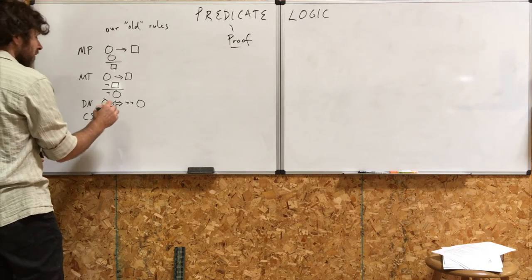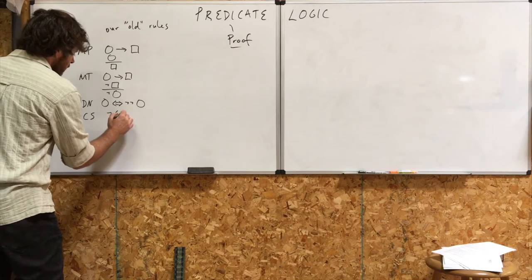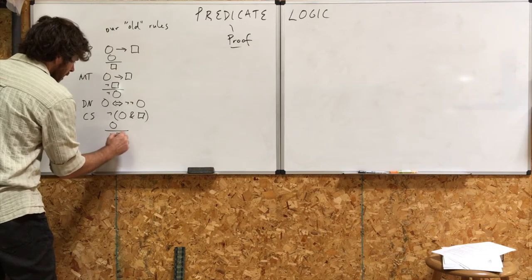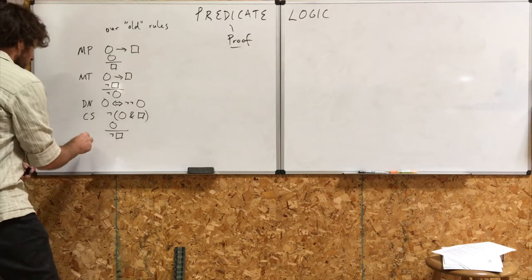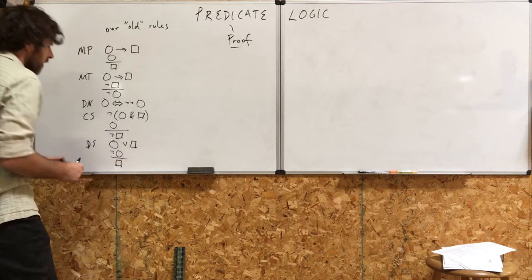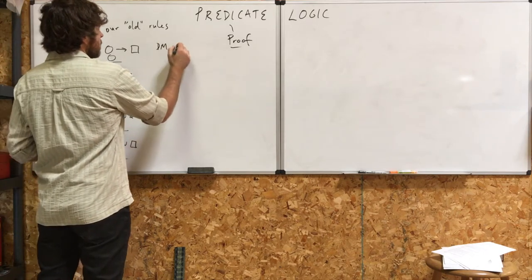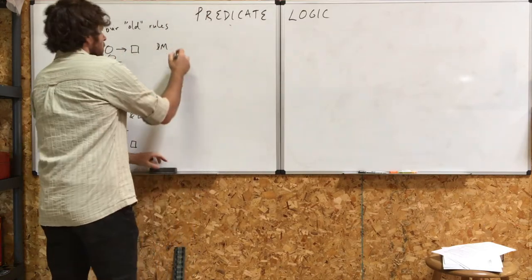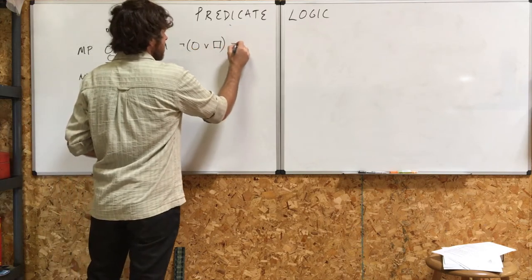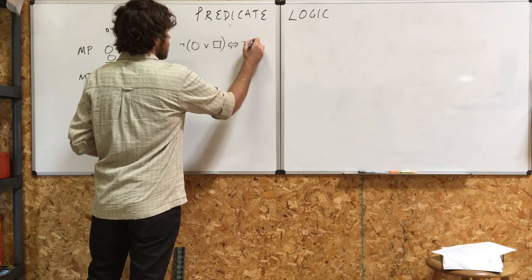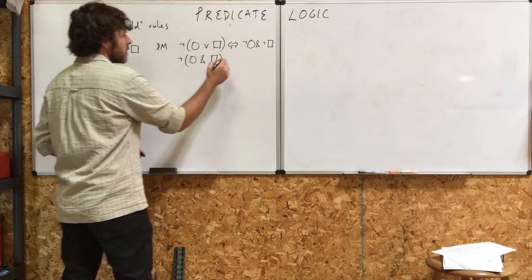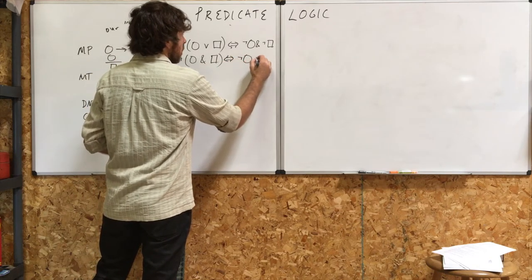CS — conjunctive syllogism: if you have the negation of a conjunction and you have one of these conjuncts, then it follows that the other conjunct is false. DS — disjunctive syllogism: start with a disjunction; if one of them is not true, then the other one has to be true. DM — De Morgan's. Remember there were two versions: 'neither circle nor square' is the same as 'not circle and not square,' and the other version is 'not circle or not square.'